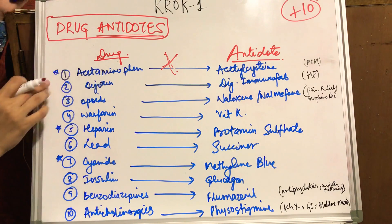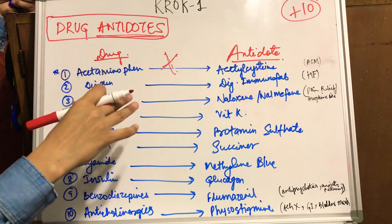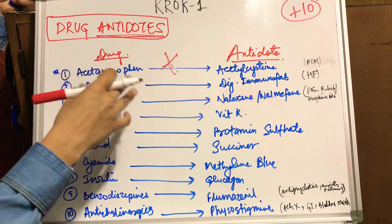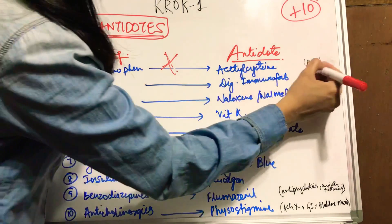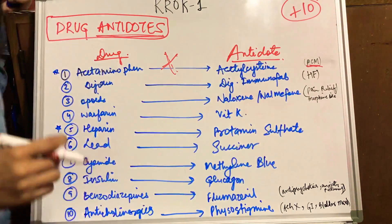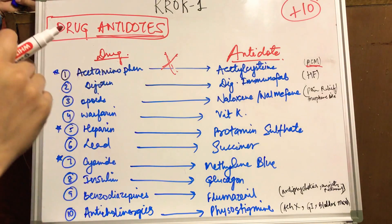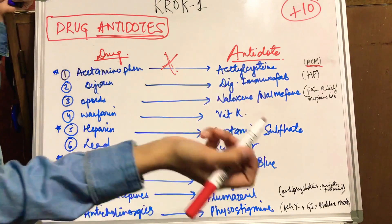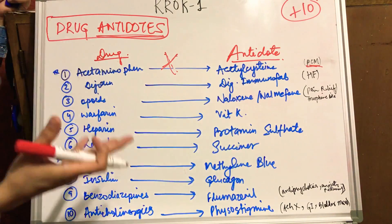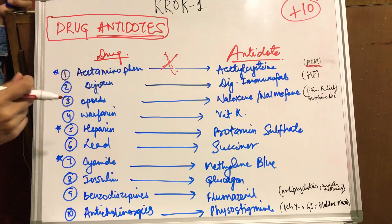The first drug is acetaminophen, which is another name for paracetamol — commonly known as PCM, very commonly used. The antidote for this drug is acetylcysteine. You just need to remember these names.